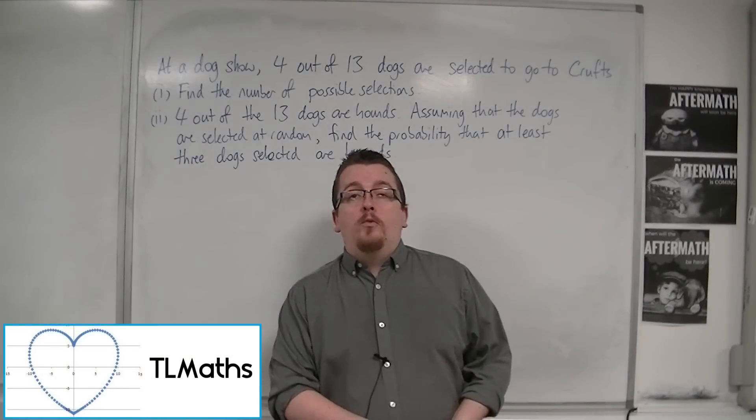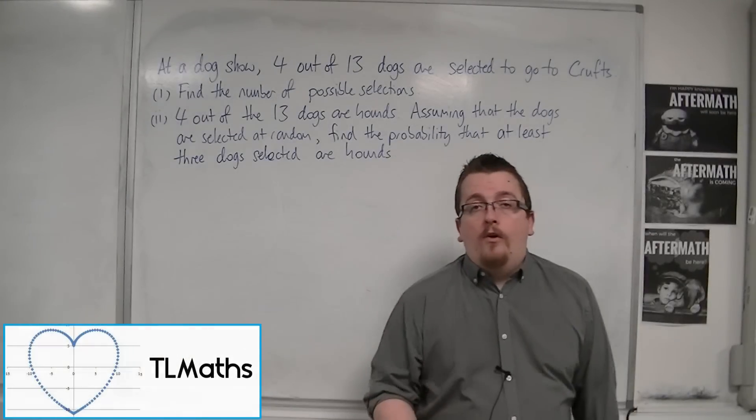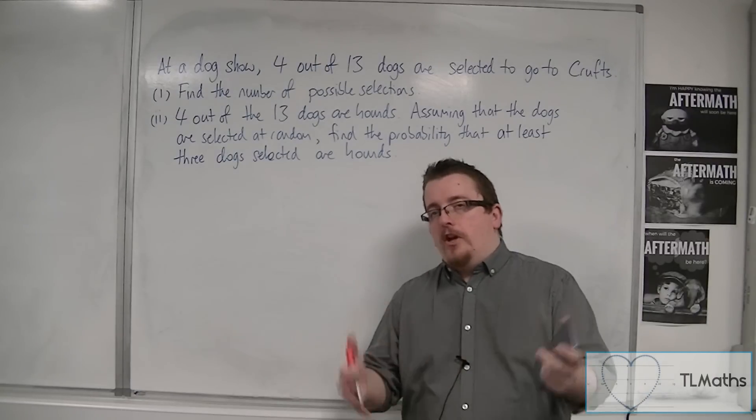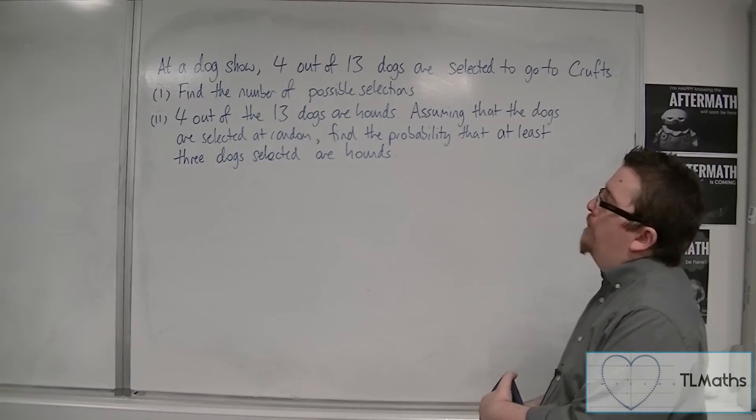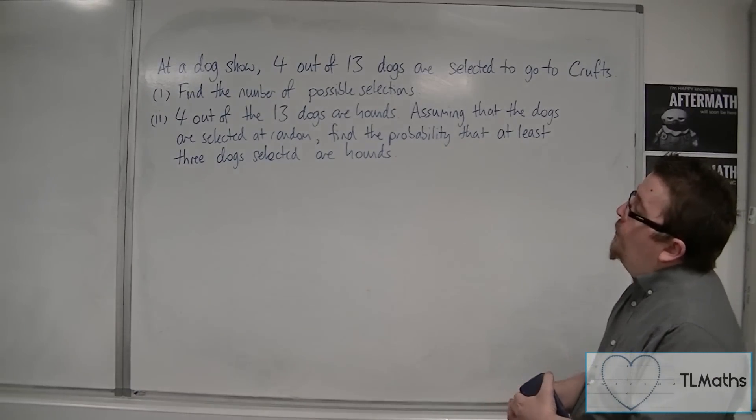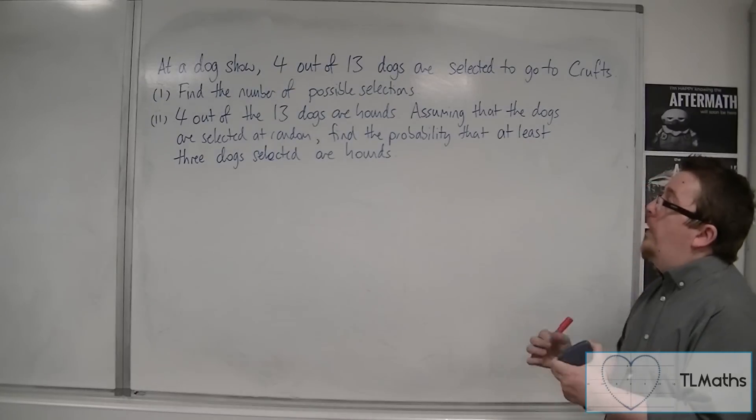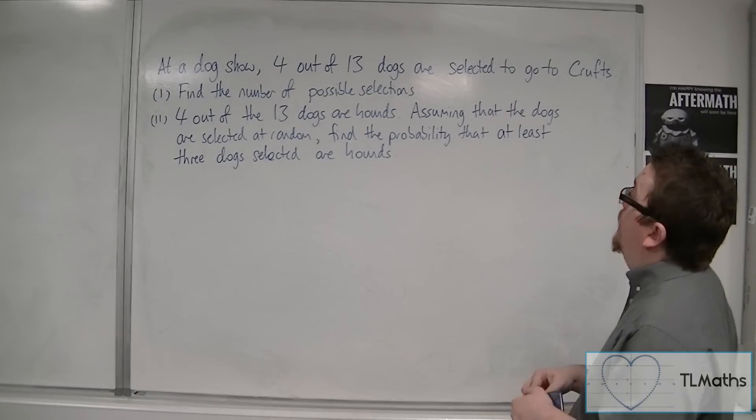In the next couple of videos, I'm going to work through a couple of exam questions, or exam-style questions anyway, because I've changed the numbers. So, at a dog show, 4 out of 13 dogs are selected to go to Crufts. Find the number of possible selections.